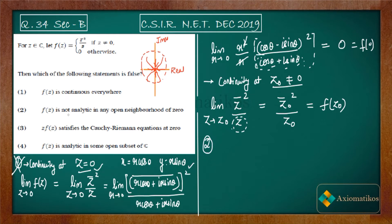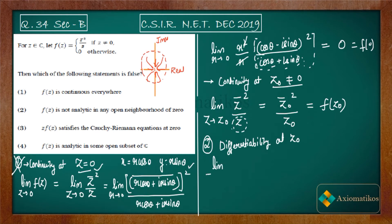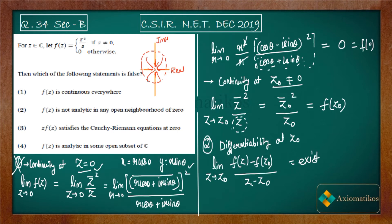In part B, the question says f(z) is not analytic in any open neighborhood of zero. I will use the differentiability definition: we call a complex function f differentiable at z₀ if the limit of [f(z) − f(z₀)]/(z − z₀) as z → z₀ exists. So let us find out whether this limit exists or not.